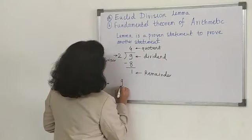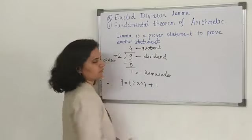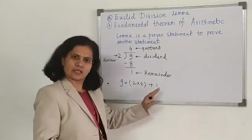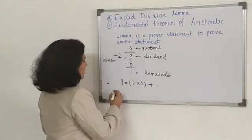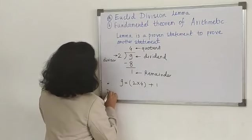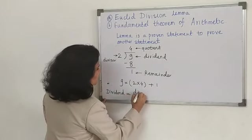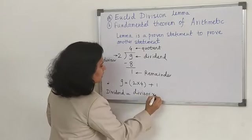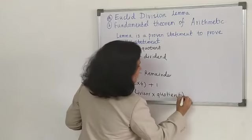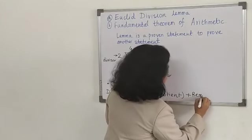Now, 9 is equal to 2 into 4 plus 1. 2 into 4 is 8, 8 plus 1 is 9. I will tell you this another way which we have already read. 9 is dividend, which is equal to 2 as divisor, 4 is quotient, plus 1 as remainder.